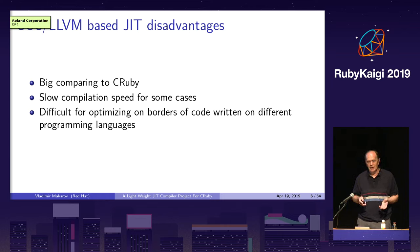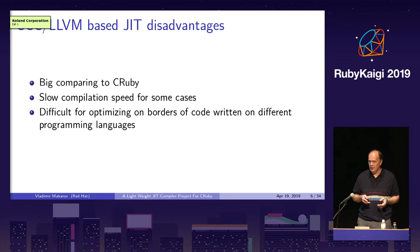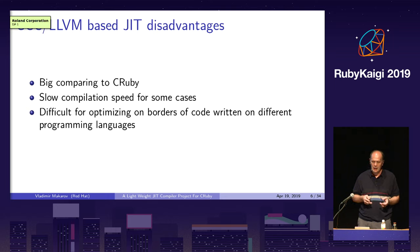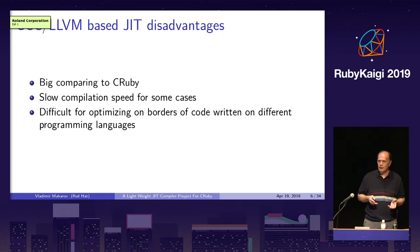But enough about advantages of GCC/LLVM-based JITs. Let us speak about their disadvantages. First of all, GCC/LLVM-based JITs are big. Their compilation speed can be slow also. And it's hard to implement optimization of code written on different programming languages — in the case of CRuby, those are Ruby and C. So let us consider these disadvantages in more detail.